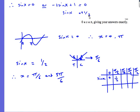For sinx = 1/2: you should know from your table of values that sinx = 1/2 gives an angle of π/6. Using the CAST diagram, π/6 is in the first quadrant. The other value is π − π/6 = 5π/6. So the two answers for this part are x = π/6 and x = 5π/6.